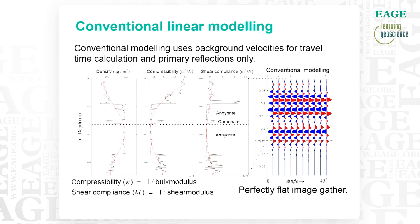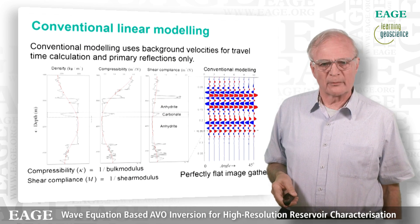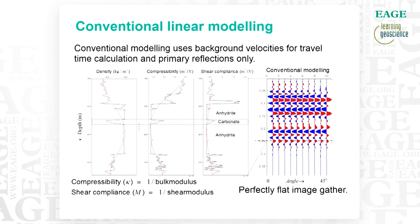You see the horizontal axis says 'angle', but actually this is ray parameter. I always say angle but mean ray parameter, because the physics of the problem is always in terms of ray parameter. So this is a perfectly flat image gather — that's what linear modeling gives you.